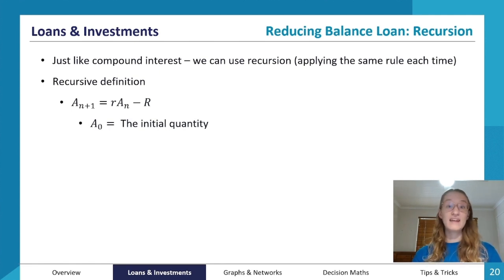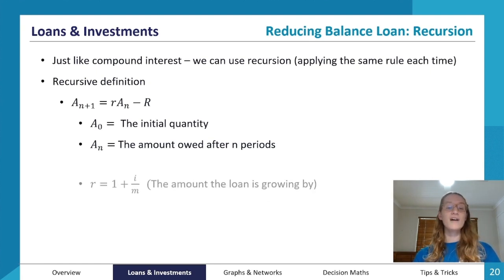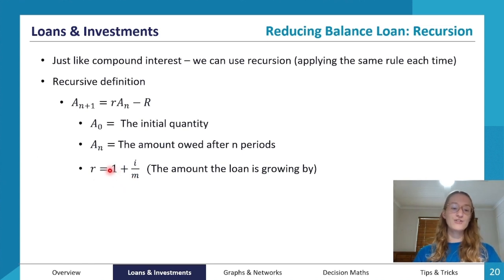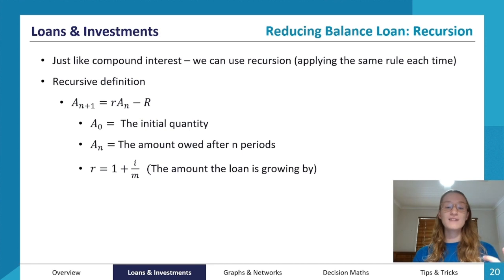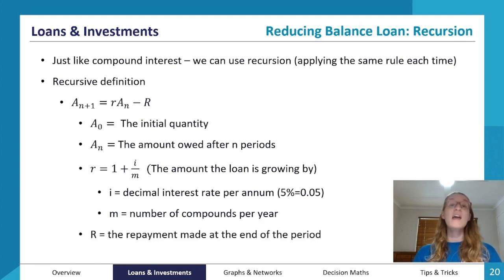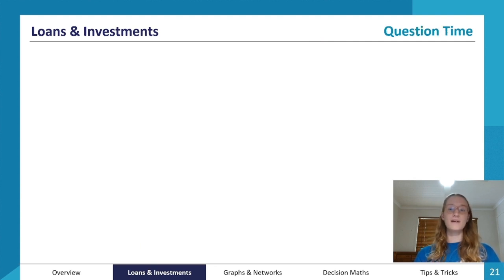A₀ is the initial quantity of the loan. Aₙ is the amount owed after n periods. r equals 1 plus i divided by m — that is, 1 plus the decimal annual interest rate divided by the number of compounds per year — which gives us the factor by which the loan grows. Capital R is the repayment being made at the end of each period.